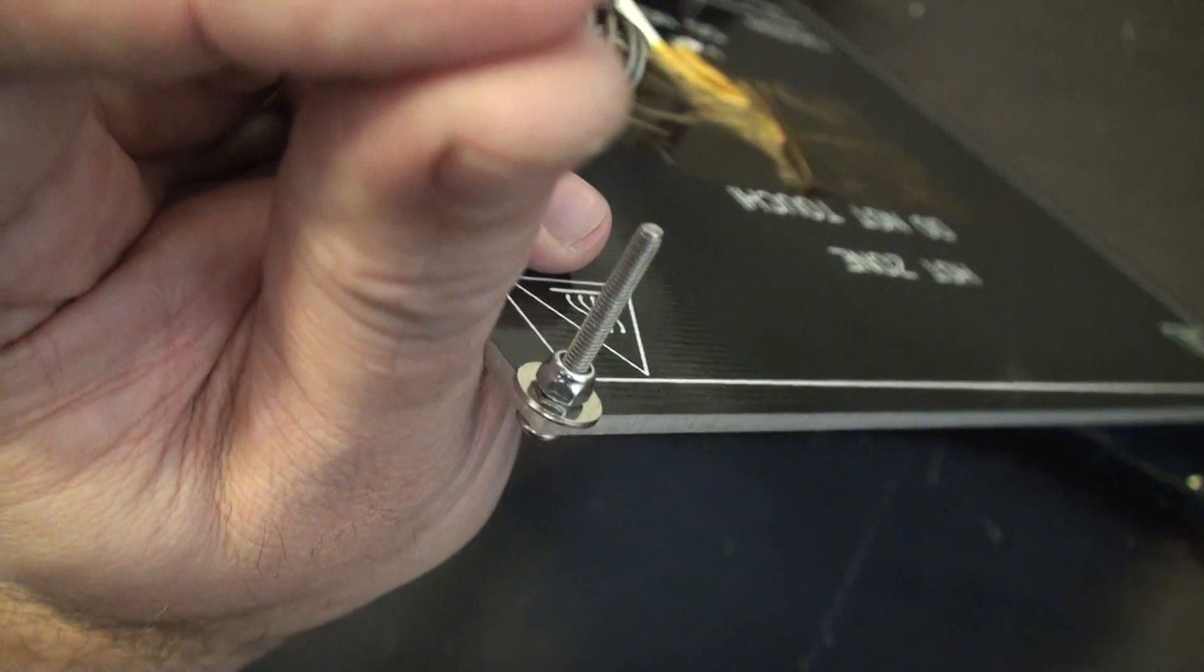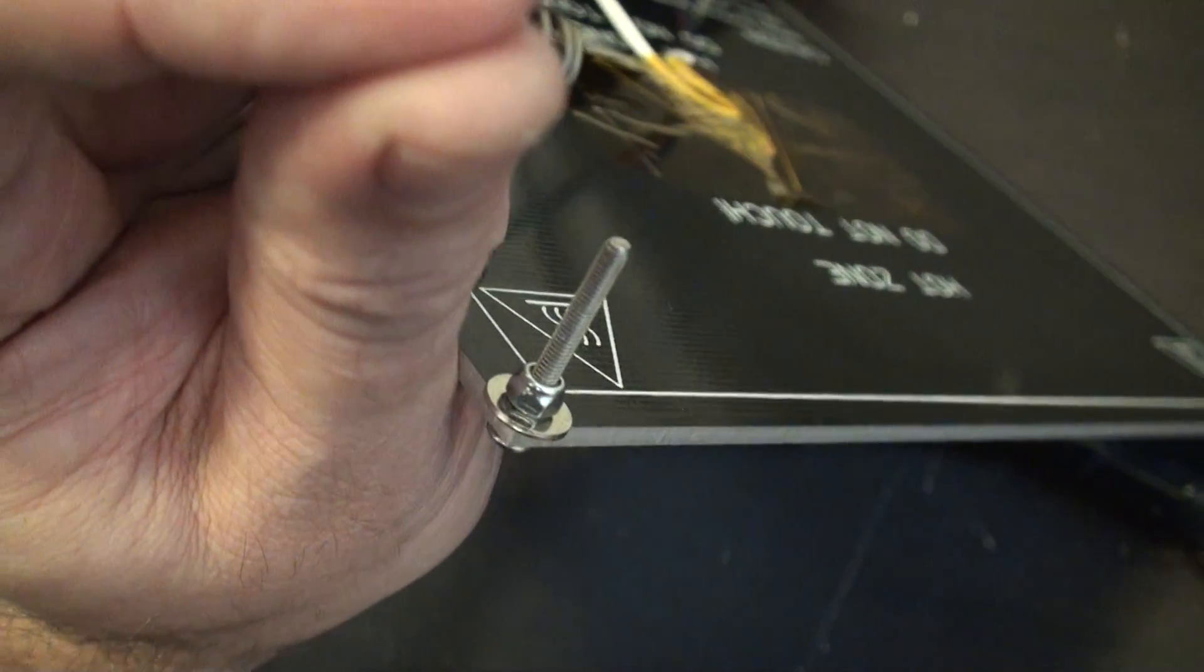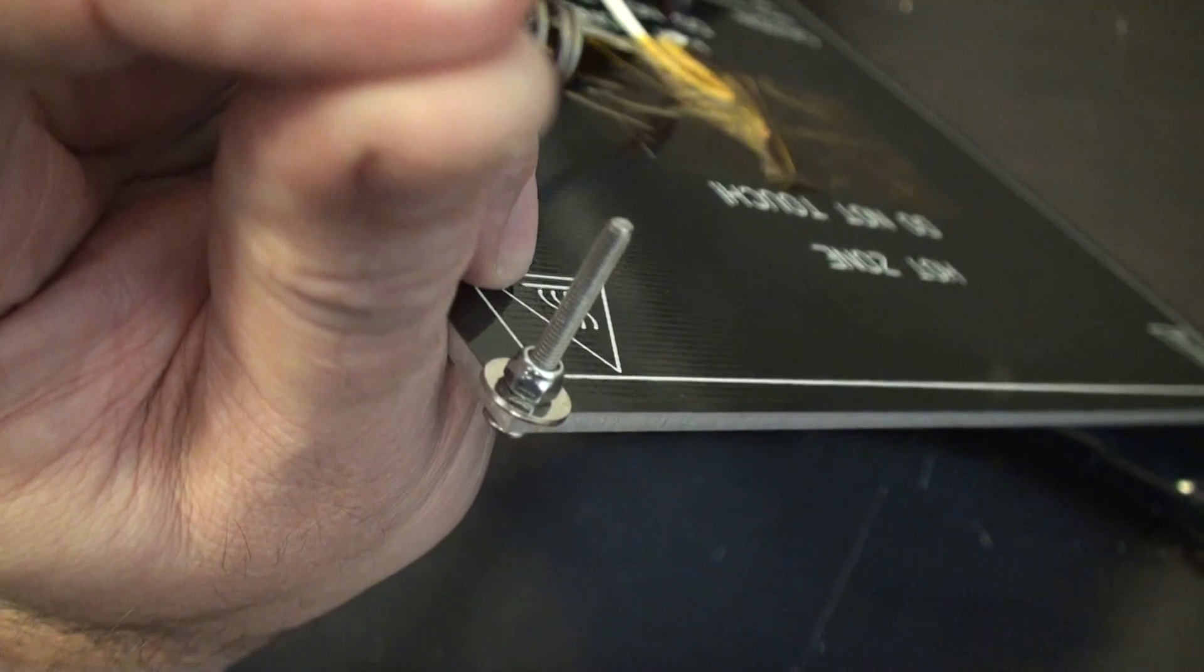You want to put the curved side, non-sharp edge towards the circuit board because you don't want to cut the traces there.